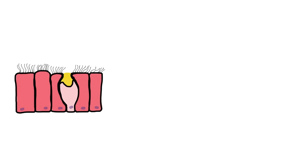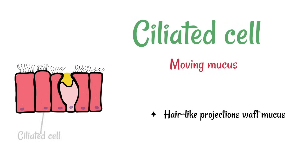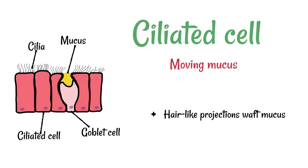Ciliated cells are responsible for moving mucus along — for example, to move mucus which traps dust and pathogens out of the lungs. They've got hair-like projections which are able to move in order to waft mucus. In this diagram there are several ciliated cells, and you can see the little hair-like structures on top of them known as cilia. There is also a goblet cell amongst them which produces the mucus that is able to trap things like pathogens and dust.